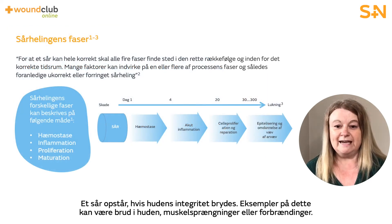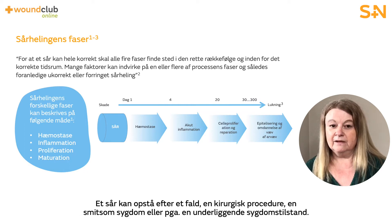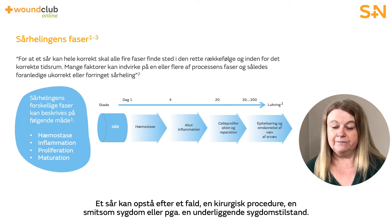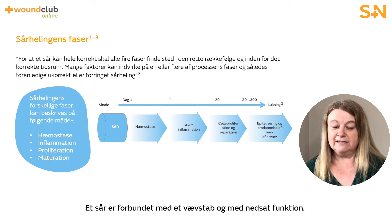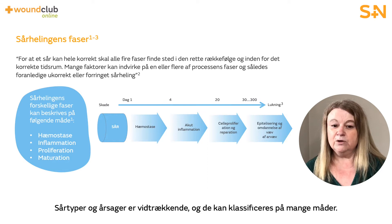A wound occurs when the integrity of any tissue is compromised. Examples include skin breaks, muscle tears or burns. It may be caused as a result of a fall, a surgical procedure, an infectious disease, or an underlying pathological condition. It is generally associated with a loss of tissue and an impairment of function. The types and causes of wounds are wide-ranging and there are several different ways of classifying them.